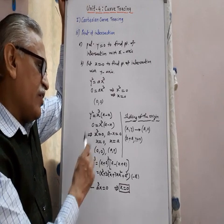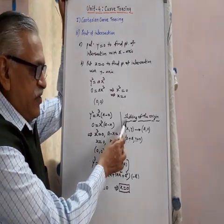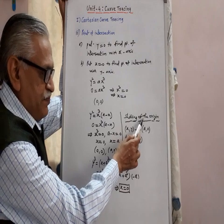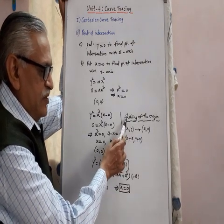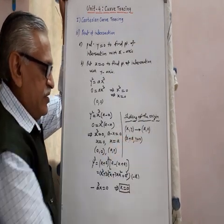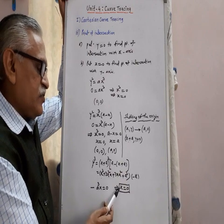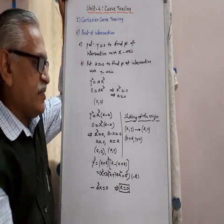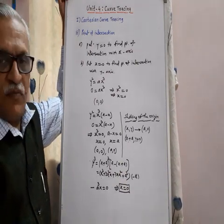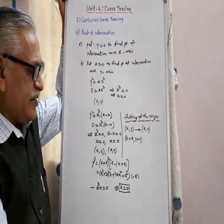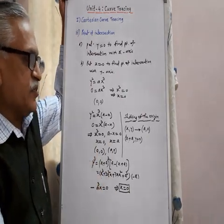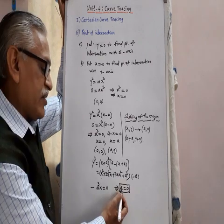If the intersection is other than origin, then we have to complete this step of shifting of the origin. The purpose is to find out the tangent at that point of intersection, and the tangent helps to decide the shape of the curve.